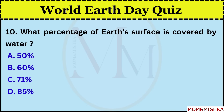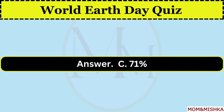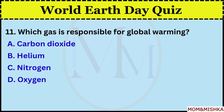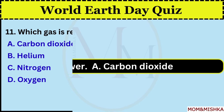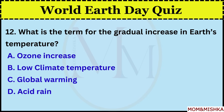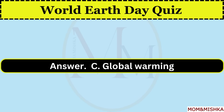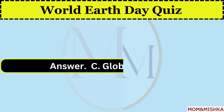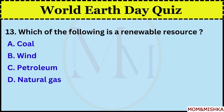What percentage of Earth's surface is covered by water? 71%, option C. Which gas is responsible for global warming? Carbon dioxide, option A. What is the term for the gradual increase in Earth's temperature? Global warming, option C.